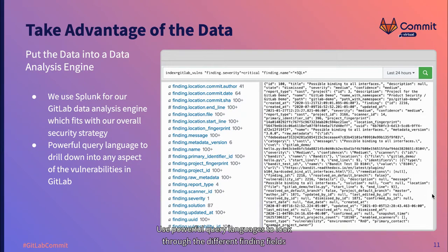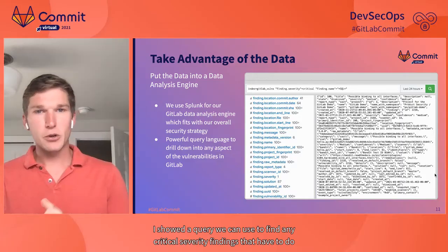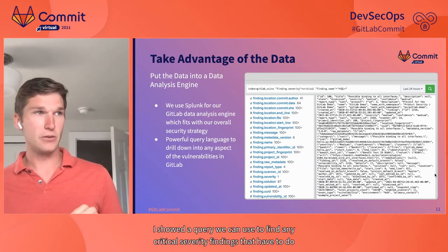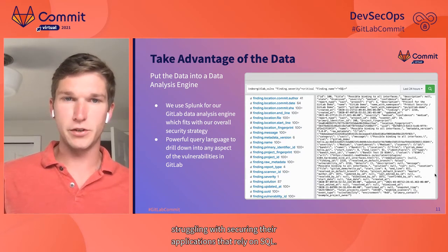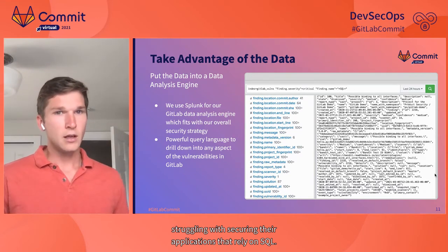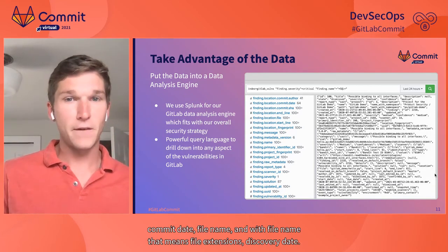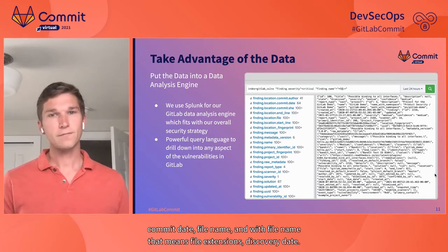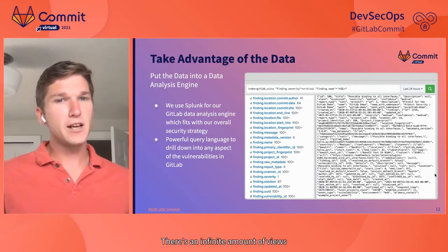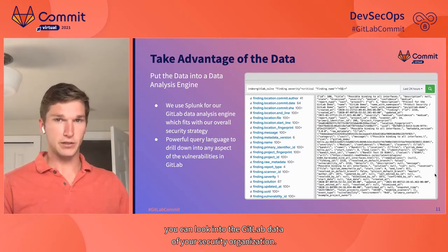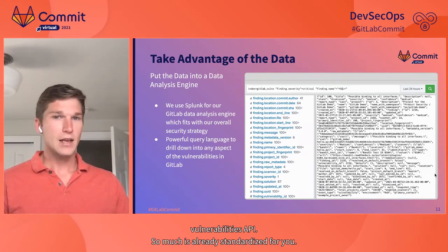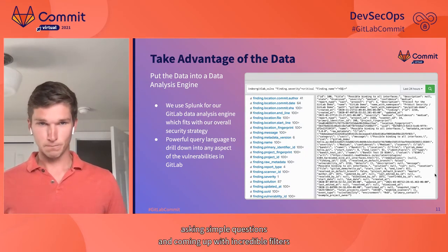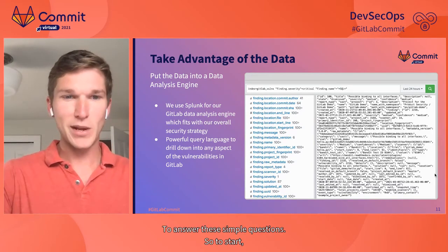Use powerful query languages to look through the different finding fields and filter or group your data in any way you can imagine. For example, you can find any critical severity findings that have to do with SQL, then group these by commit authors or project groups to get a list of users who are struggling with securing applications that rely on SQL. You have commit author, commit date, file name, file extensions, and discovery date — there's an infinite amount of views you can look into with the GitLab data of your security organization, and with it all comes the same vulnerabilities API. So much is already standardized for you.